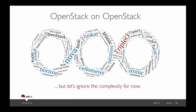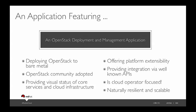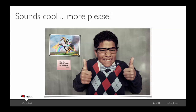Triple O is OpenStack on OpenStack. Basically, think of it as a simple deployment and management application — just an application that deploys OpenStack. This application features deploying to bare metal, a community-adopted process, visualization, and most importantly it is cloud-operator focused. Because we're in OpenStack, we get all the goodness of scalability and resiliency in terms of having a management infrastructure. Let's talk about it in a little more detail.